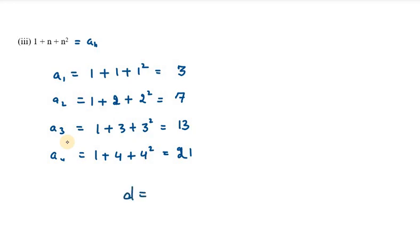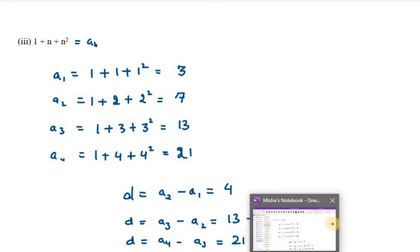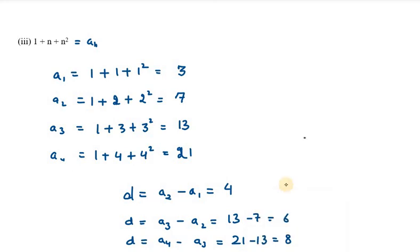Let's check with the help of difference. a2 minus a1 is 7 minus 3, which is 4. Next, a3 minus a2 equals 13 minus 7, which is 6. Next difference, a4 minus a3, is 21 minus 13, which is 8. You can check the differences at different points and you will find that all the differences are different. If they are different, that means they are not forming an A.P.